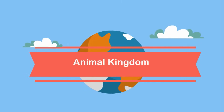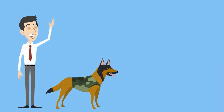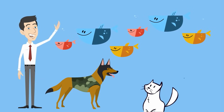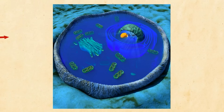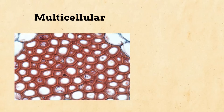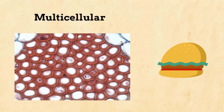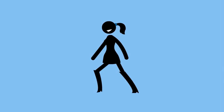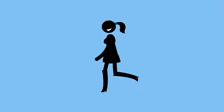The animal kingdom: Kingdom Animalia is made up of many organisms we encounter daily. Your pet dog belongs to this kingdom, along with fish, cats, humans, and many other types of animals. All animals are eukaryotes, which means they all have a nucleus and membrane-bound organelles. They are all multicellular organisms. All are heterotrophs — they cannot produce their own food and must eat another organism. Almost all animals can move; some sponges cannot move, so that might be an exception.